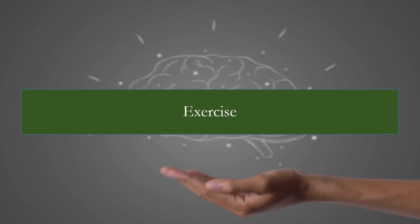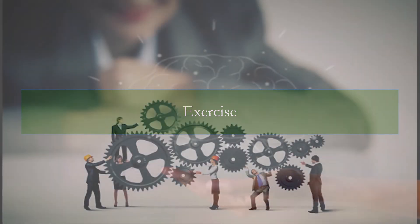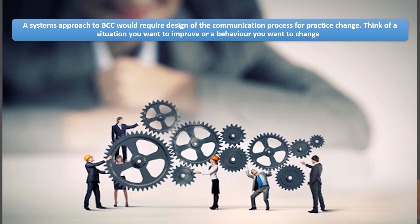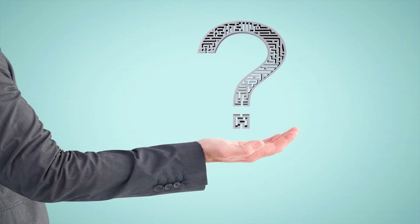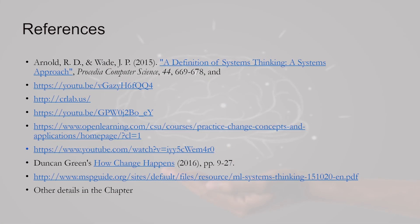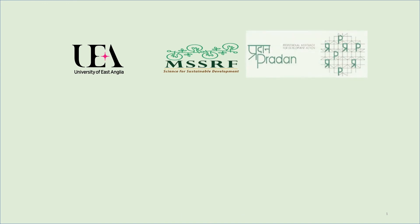A final exercise: a systems approach to behavior change communication requires you to design the communication process for practice change. Think of a situation you want to improve or a behavior you want to change. Three questions: What are the technical and complex situations that require improvement? Whose practices need to change, in what direction, and who decides? Would you include your own practices as requiring change too? Please look at the references in the chapter, watch the related videos, and thank you so much.